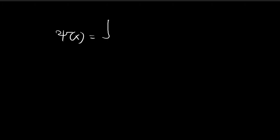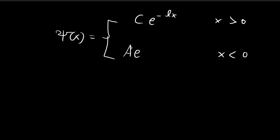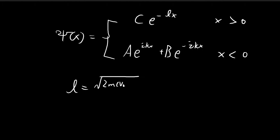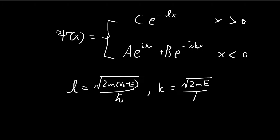To summarize: ψ(x) = C·e^(−Lx) for x > 0, and ψ(x) = A·e^(ikx) + B·e^(−ikx) for x < 0, where L = √(2m(V₀ − E))/ℏ and k = √(2mE)/ℏ. The reflection coefficient R = |B|²/|A|². The A·e^(ikx) term represents waves traveling to the right and B·e^(−ikx) represents waves traveling to the left, so this ratio gives the fraction of waves that bounce back.